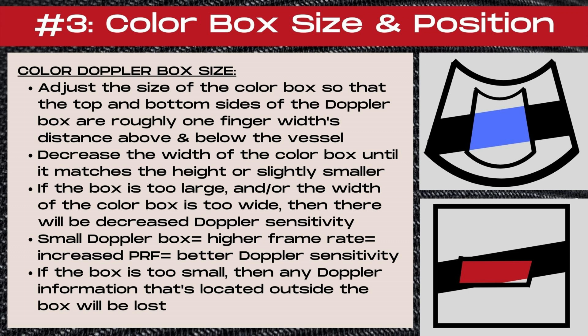The next step in our color Doppler optimization checklist is to adjust the color box size and position. Adjust the size of the color box so that the top and bottom sides are roughly one finger width distance above and below the vessel or area of interest. Then decrease the width of the color box until it matches the height or is slightly smaller than the height. If the color Doppler box is too large and or the width is too wide, there will be decreased Doppler sensitivity.